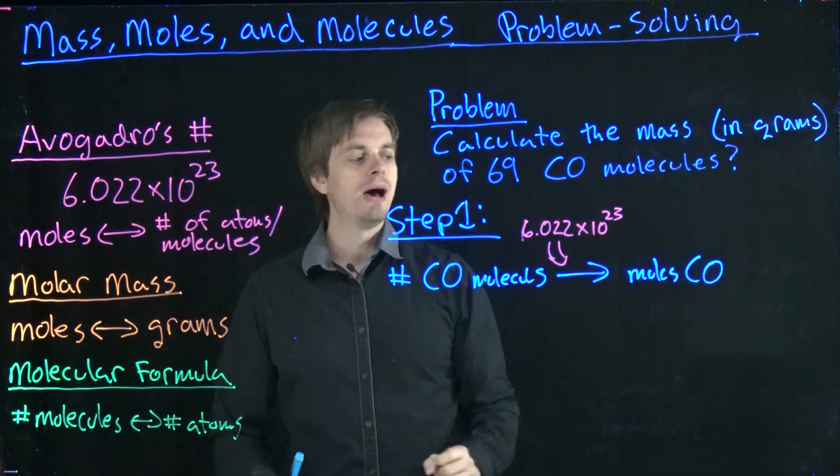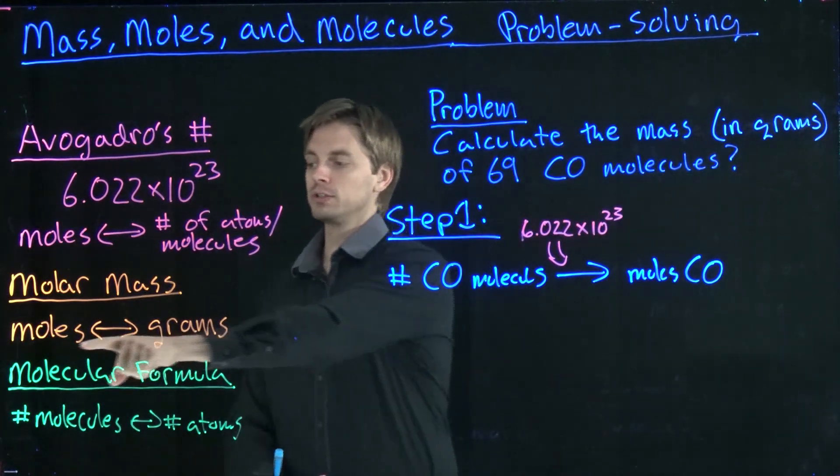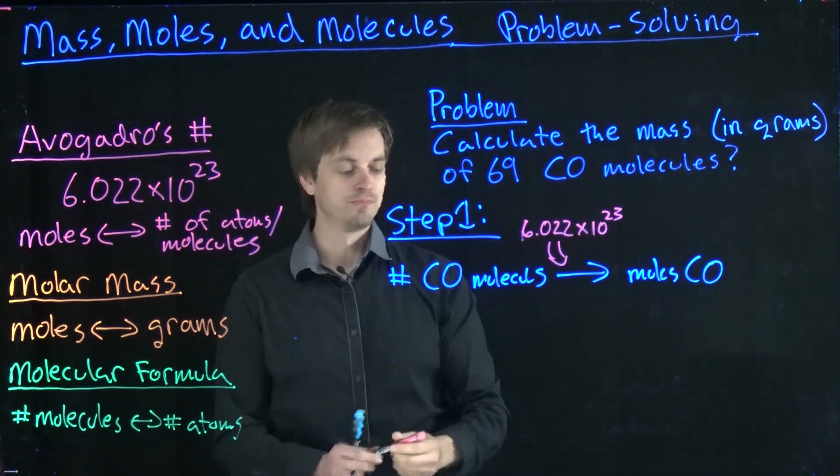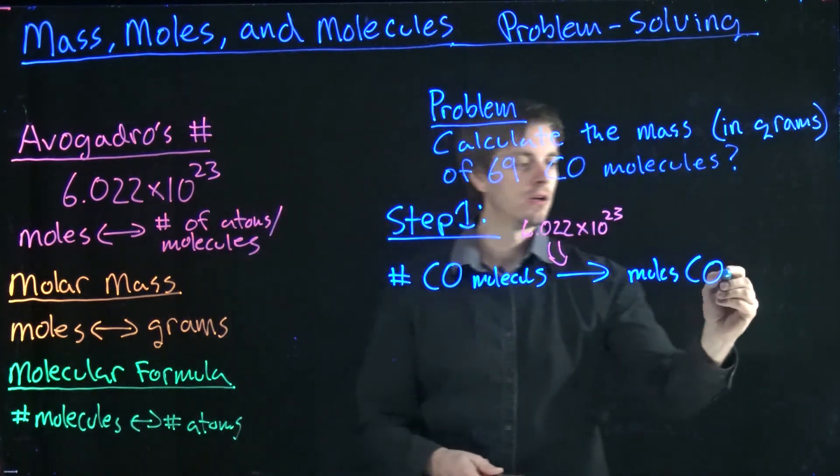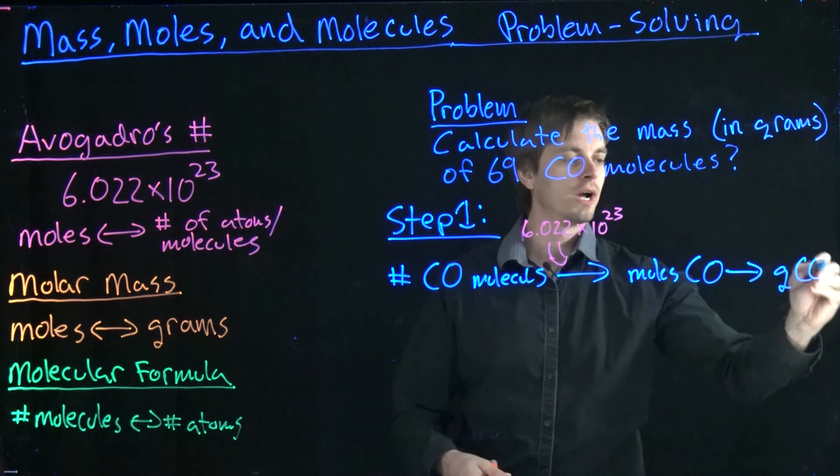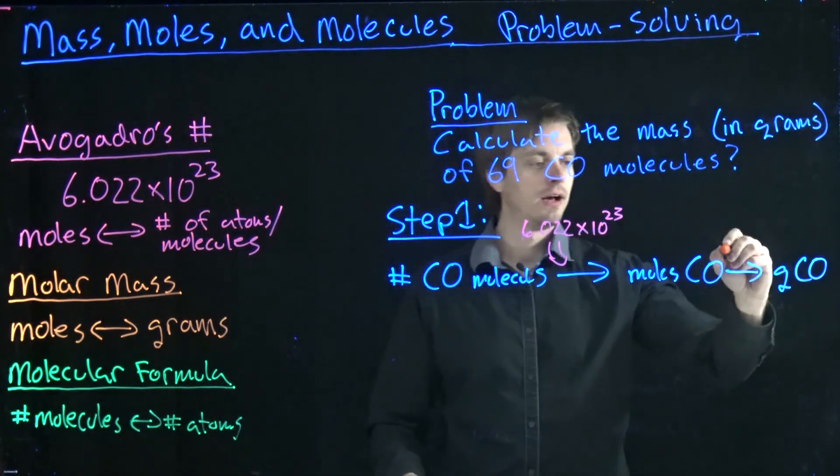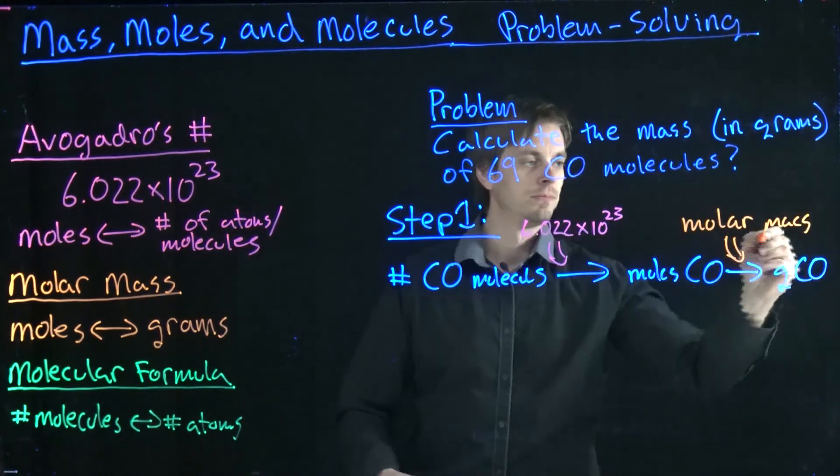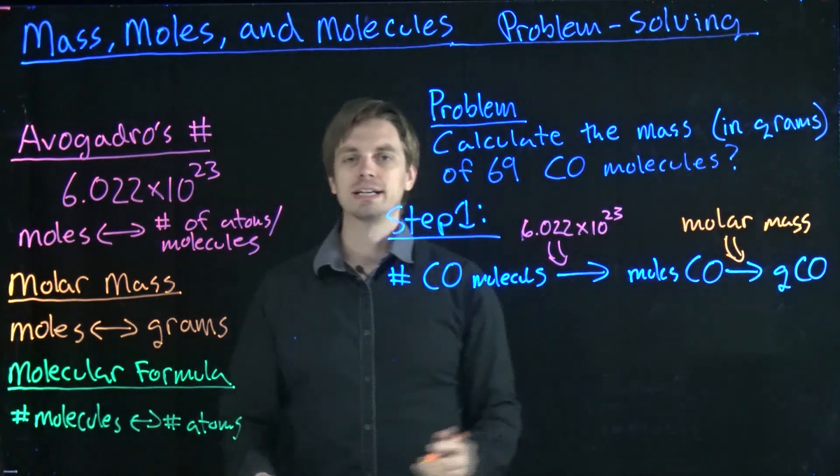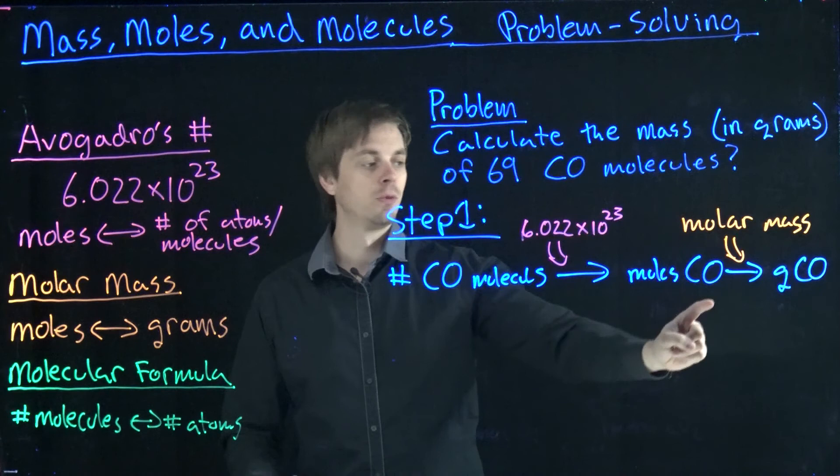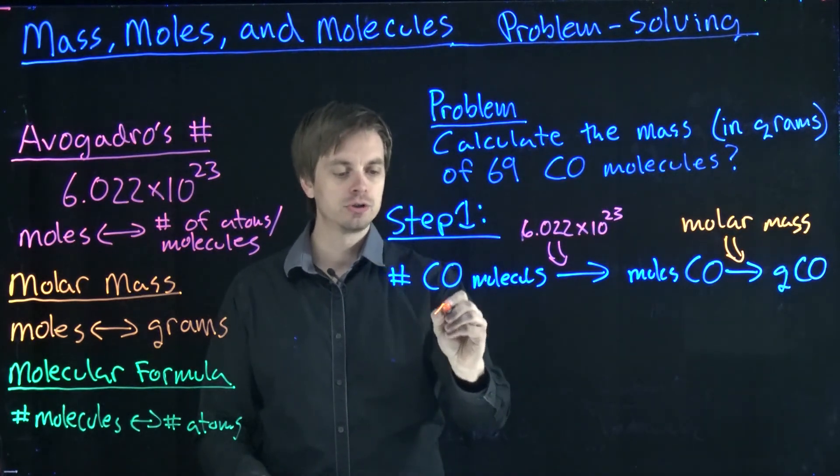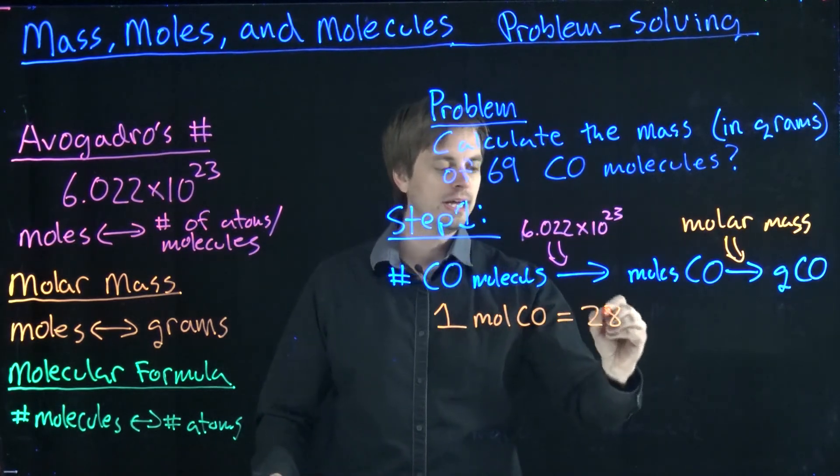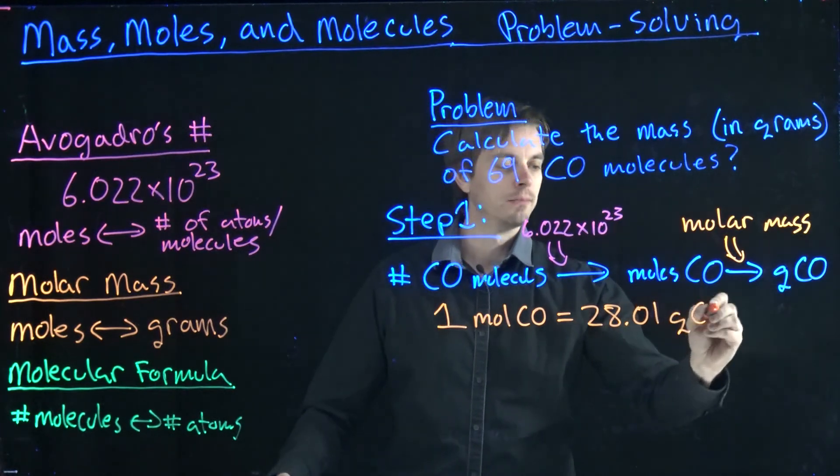Now, at the end of the day, we want mass. Well, once we're in units of moles, we can use our molar mass conversion factor to go from moles of that substance to the mass. We're going to use our molar mass, and we're going to end up with grams of CO at the end of the day. So, looking at the periodic table, determining the molar mass of carbon, molar mass of oxygen, adding both those together, you should find that one mole of carbon monoxide equals 28.01 grams of carbon monoxide.